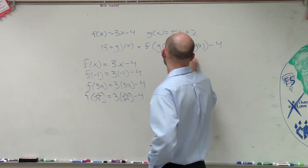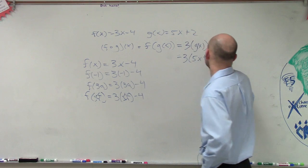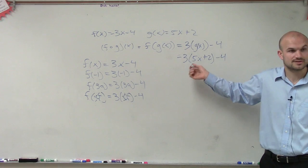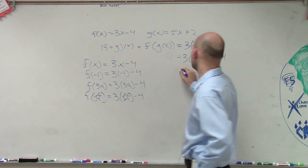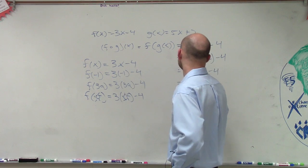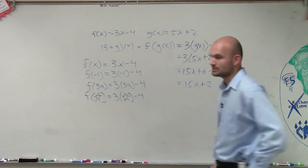So therefore, this equals 3 times 5x plus 2 minus 4, right? Because g of x equals 5x plus 2. Then you apply the distributive property, and therefore, your final answer is 15x plus 2.